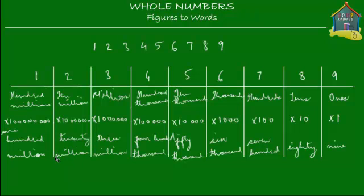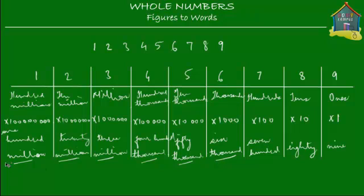Now, read out the number in words. The number 123,456,789 in words is 100 million and 20 million and 3 million and 400,000 and 50,000 and 6,000 and 789. But there is a trick — you don't say it like this, because certain parts repeat. Why say 'million' three times when you can say it just once? So instead of '100 million and 20 million and 3 million,' simply say '123 million.' Similarly, use the word 'thousand' just once.